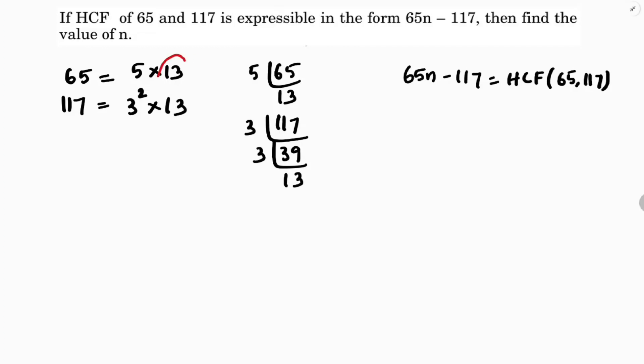Clearly the HCF is here 13. HCF is 13. They told HCF is expressed in the form of 65n minus 117 equals 13.